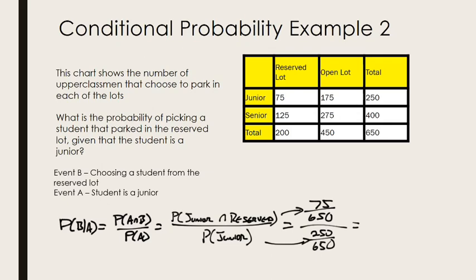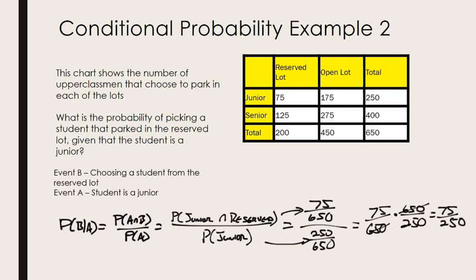When we do the math — 75 over 650 divided by 250 over 650 — we flip the second and multiply, the 650s cancel, leaving 75 out of 250. That is 30 percent. So we got a different answer, and the math looks a little different within the problem as well.